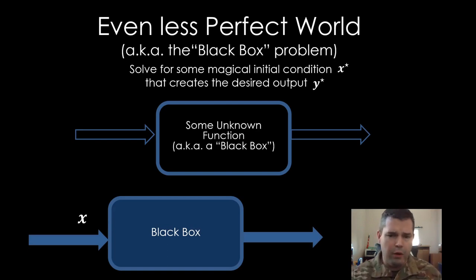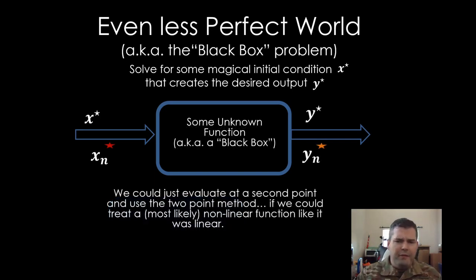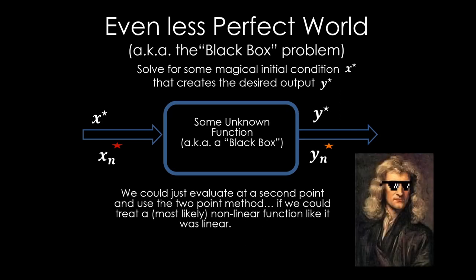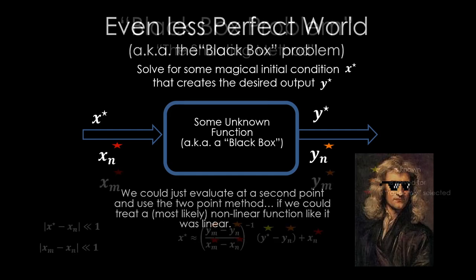So now enter an even less perfect world. We don't even know the function. Absolutely no knowledge of the function. I'm calling this the black box problem. All we know is that if we input a value X, we get out some value Y. So let's go back to this. We've already been inserting an X and getting a Y. But if only we can treat the function as linear enough, then maybe we can apply the third form that we've been using.